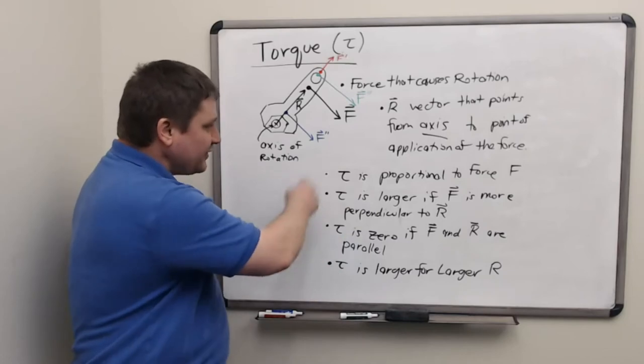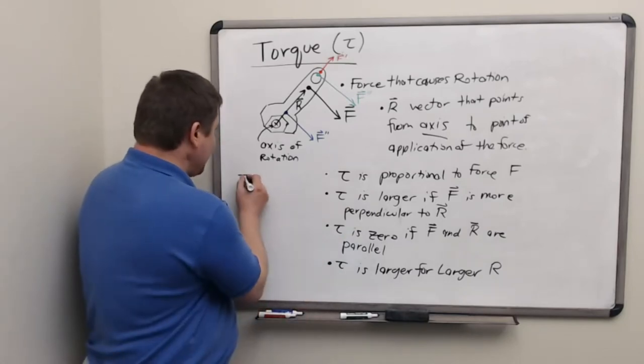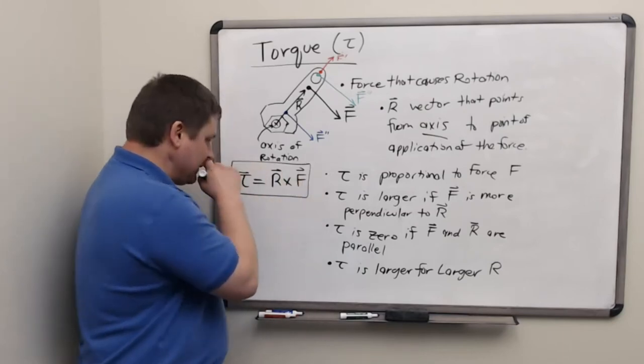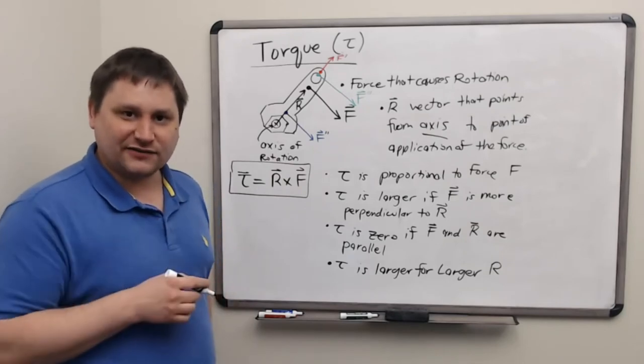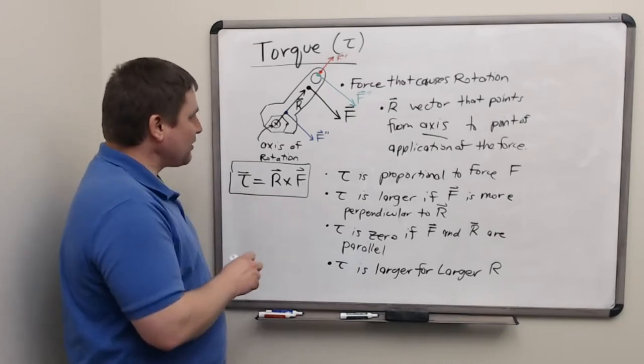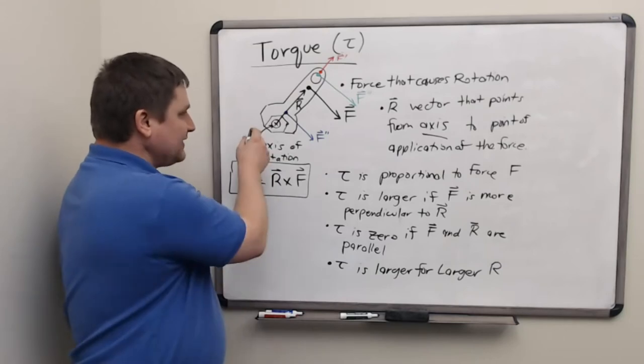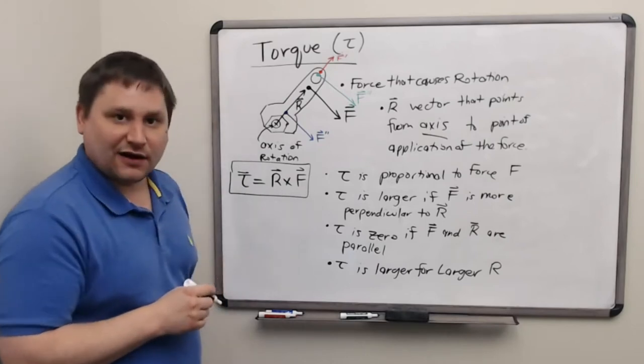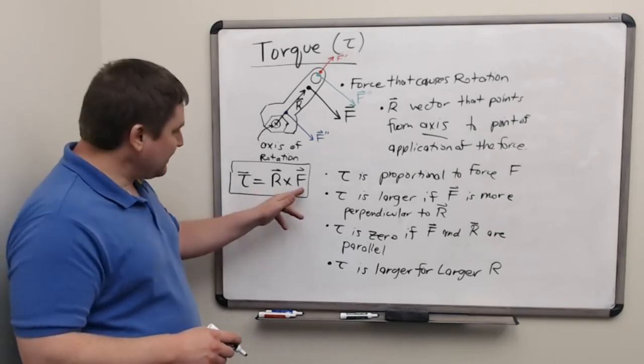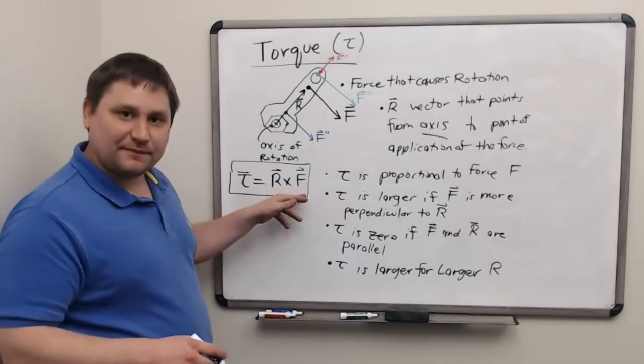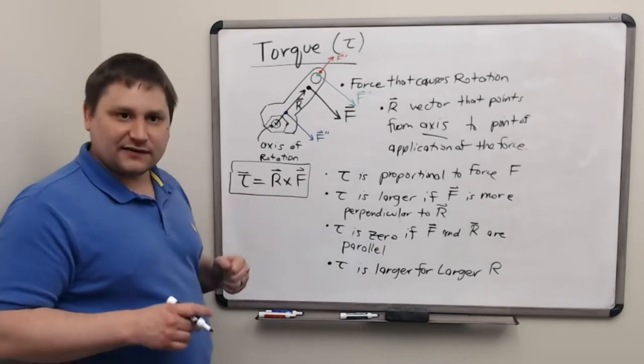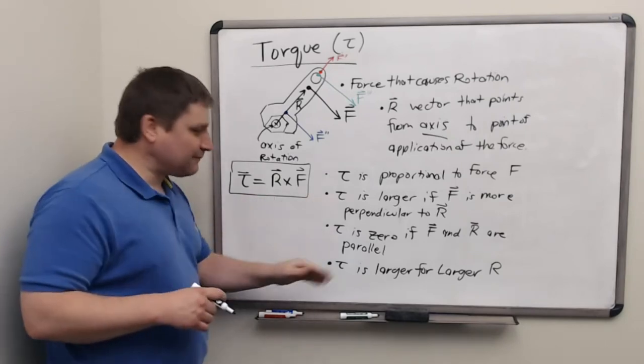All of these intuitions about a value to represent torque can be summarized in a singular formula. Although it requires us to use cross products, vector cross products to write it in such a concise way, and it includes all of these aspects. So the torque equal to the cross product of the radius vector from axis to the point where the force is applied, cross product with the force vector itself. If we recall some of the properties of this cross product, it's proportional to the size of R, the magnitude of R, it's proportional to the magnitude of F, it's zero when the two vectors are parallel, it's maximized when the two vectors are perpendicular, and it scales between zero and the max as the angle between the vectors is moved from parallel to perpendicular. So this has all of the properties that we set over here.